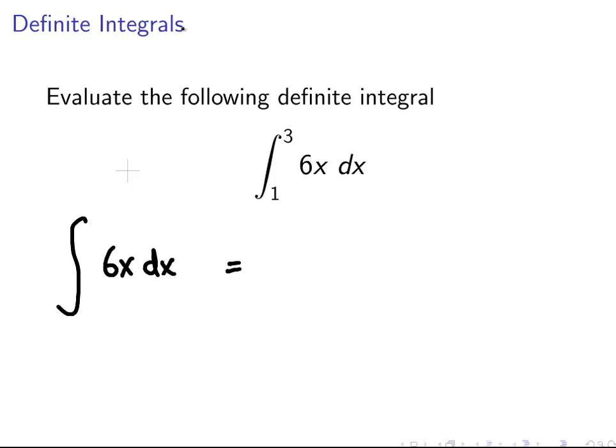6x dx. Well, that works out to be x, the limit of the integral of x, simply x squared over 2. That's just elementary integration. So this just works out to be 6x squared all over 2.